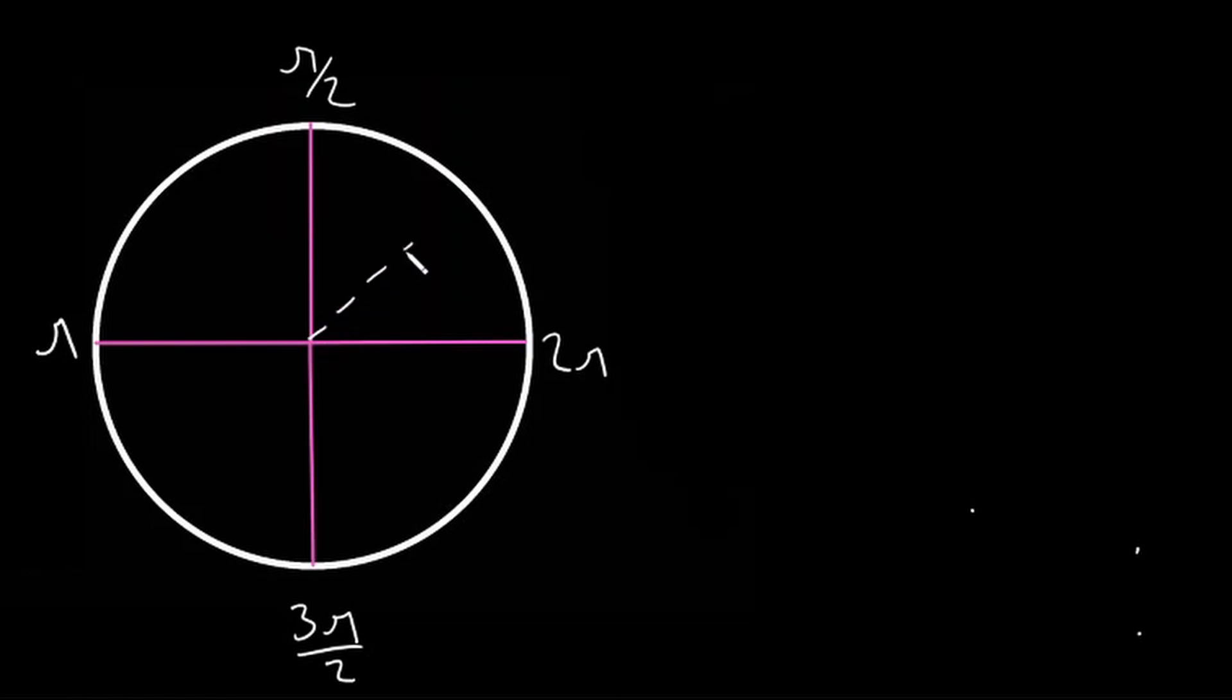And then what about this angle here, this 45 degree angle? Well, we already went over that, we know this is going to be pi over 4, and we already figured out that 60 degrees is going to be pi over 3.